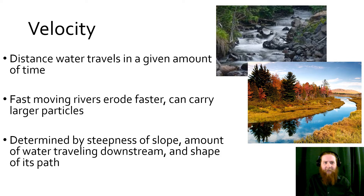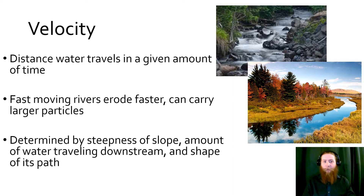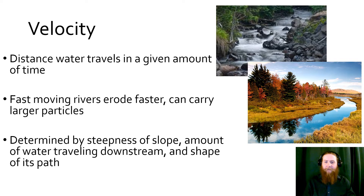Let's start with velocity. Velocity — anytime we talk about it in physics, earth science, or any physical science — is the amount of distance covered in a given time. For rivers, that's the distance this water is traveling in a given amount of time. Things with higher velocity that are moving faster are going to carry larger particles and erode more. Velocity is determined by the steepness of the slope, the amount of water traveling downstream, and the shape of the path.